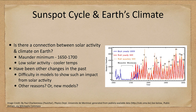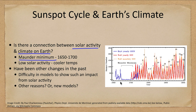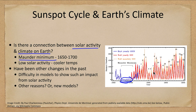Turning to weather on Earth — is there a connection between solar activity and Earth's climate? There is the Maunder minimum, between 1650 and 1700, when there were cooler temperatures on Earth and solar activity was at a minimum. There were a few sunspots, but certainly not the regular cycle that we get normally, where every 11 years or so we get a nice big peak of sunspot activity. That period of low solar activity corresponded with cooler temperatures.